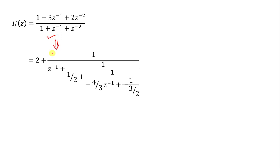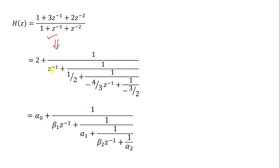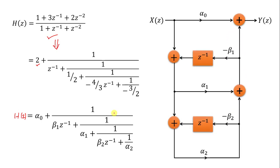Ladder structure में किसी भी transfer function को हम लोग इस format में लेकर आते हैं। I am taking this as a general format. Simply in general format, the first value is α₀ plus β₁z⁻¹ plus α₁, β₂z⁻², α₂, and so on। इन general values को एक ladder structure से represent करते हैं। Ladder structure में: α₀, फिर यहाँ −β₁, फिर α₁, फिर −β₂, फिर α₂ — this structure is same as a ladder.